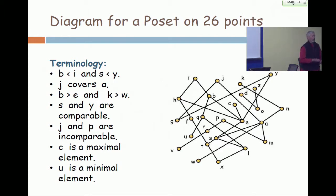If you have a total order like the integers one through five, the natural order, one less than two, less than three, less than four, less than five. So a diagram for that order would be a very simple figure.